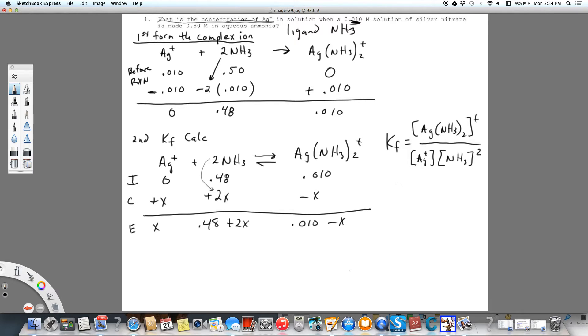Okay, Kf is given in our table of Kf values as 1.7 times 10 to the seventh. So it's a very large Kf and it favors the formation of the products.